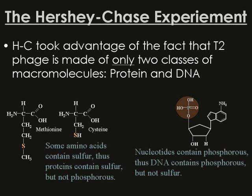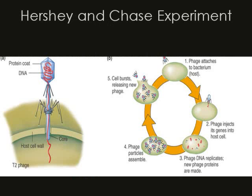Hershey-Chase took advantage of the fact that these bacteriophages only have two classes of molecules: protein and DNA. In protein, some amino acids contain sulfur, whereas this atom is lacking in DNA. DNA contains phosphorus, which is lacking in proteins. The life cycle of a bacteriophage: it floats around, lands onto a bacterium, and injects its genetic material — which we now know is DNA — into the bacteria. This DNA takes over the controls of the cell and forces it to make more bacteriophages. When the cell becomes full, it will lyse — burst open — and release more bacteriophages into the environment, which then go on to infect other cells.